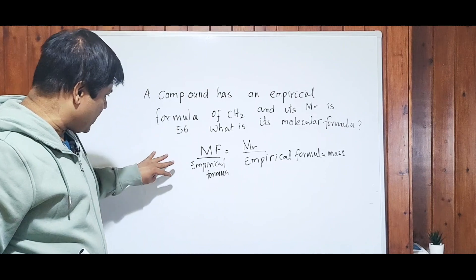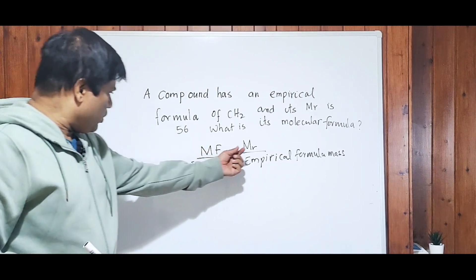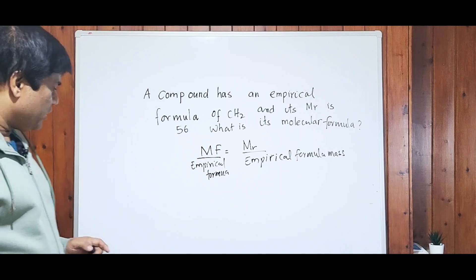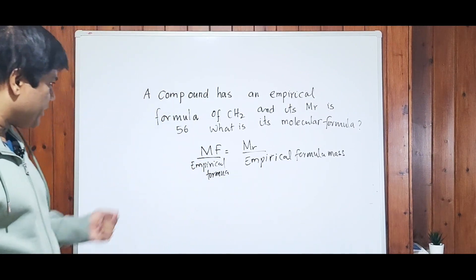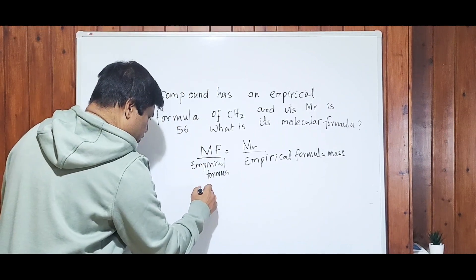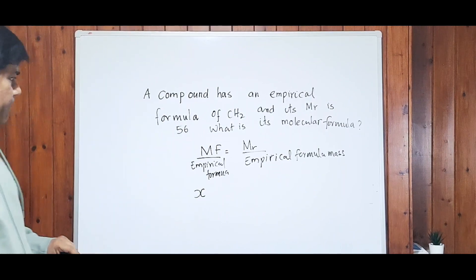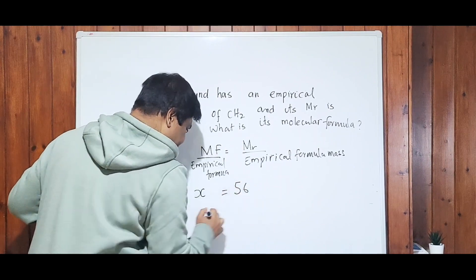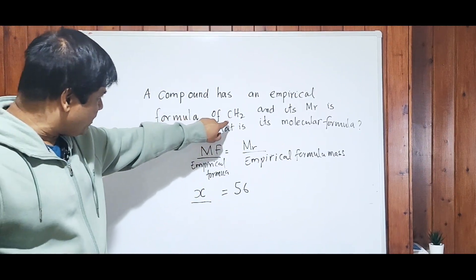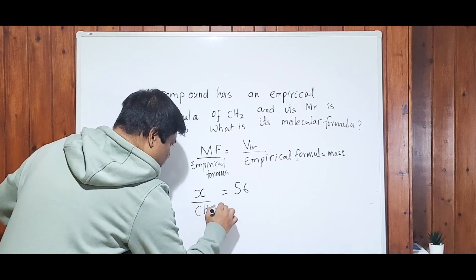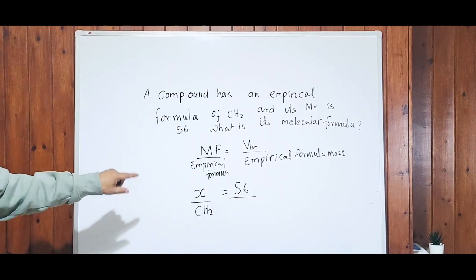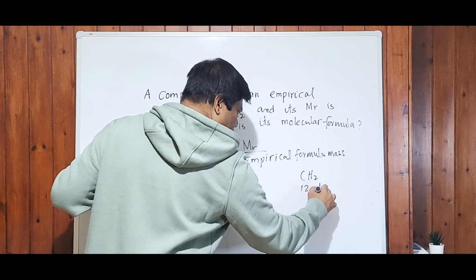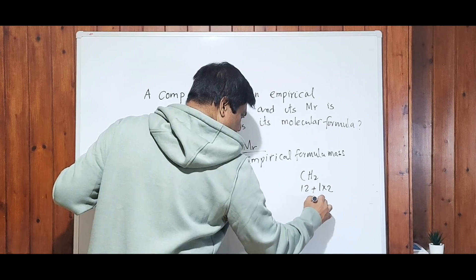Please copy down this formula: Mr represents the molecular formula mass, and empirical formula mass represents the empirical formula. We don't know the molecular formula, so let's call it x. The Mr of the compound is given as 56. The empirical formula given is CH₂. Work out the empirical formula mass: carbon Ar is 12, hydrogen Ar is 1, and there are 2 hydrogens, so 12 + 2 = 14.